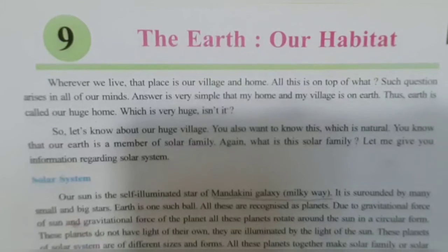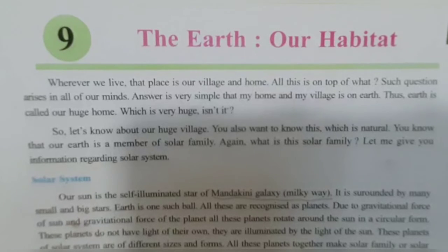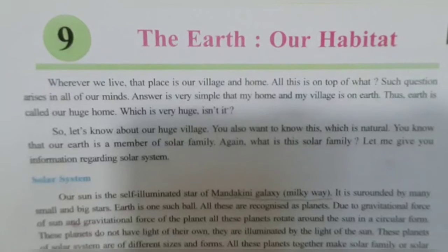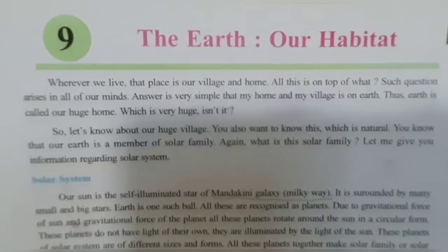Question number 6: What is meant by revolution? The earth moves around the Sun as it rotates on its axis. It takes 365 days and 6 hours to complete this revolution, which means one year. The earth rotates on its axis at an angle of 23.5 degrees on its axis and 66.5 degrees along its orbit. Due to the revolution of the earth, seasons occur and day and night are extended and shortened.